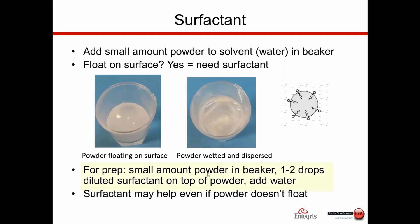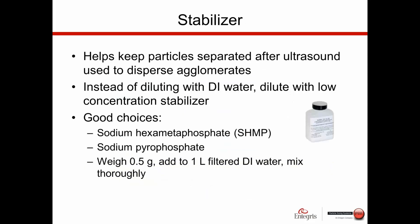The best approach for dispersing powders is: put the powder in the bottom of the beaker, add one to two drops of diluted surfactant directly onto the powder, then add the water. If particles re-agglomerate over time, consider using sodium hexametaphosphate solution as the diluent instead of DI water. Prepare it by dissolving about 0.5 grams of sodium hexametaphosphate into one liter of filtered DI water and mixing for 30 minutes to an hour. This stabilizes the surface charge so that once ultrasound breaks up agglomerates, they don't re-form.